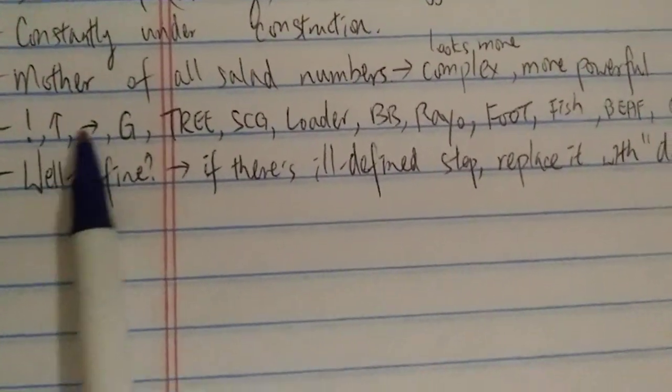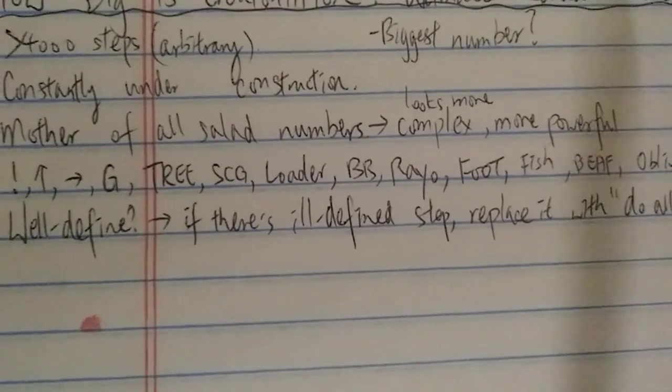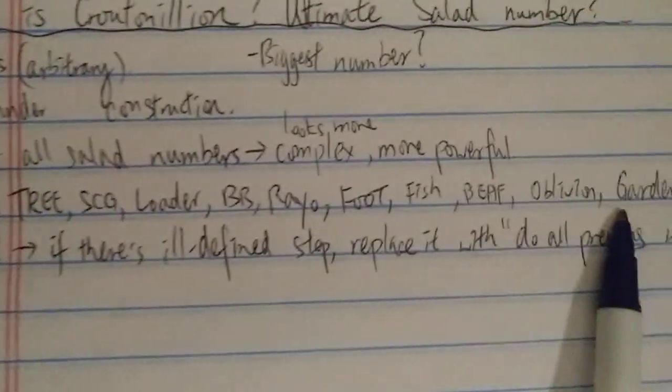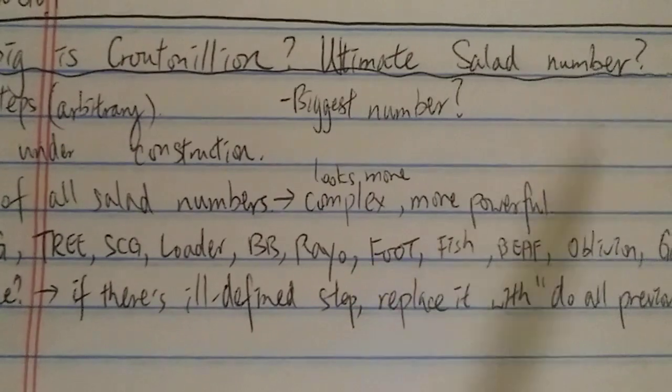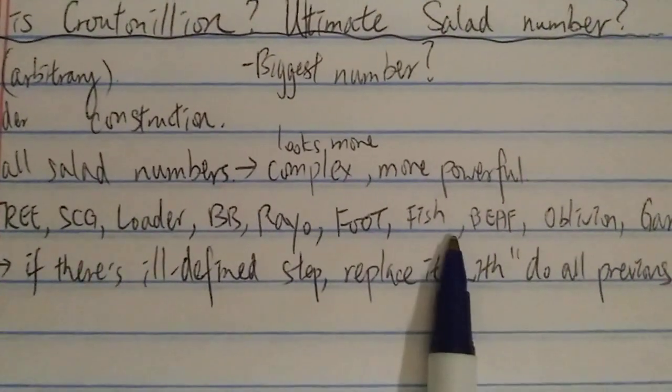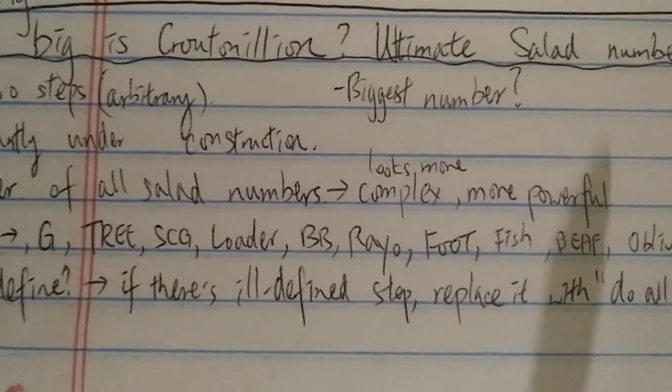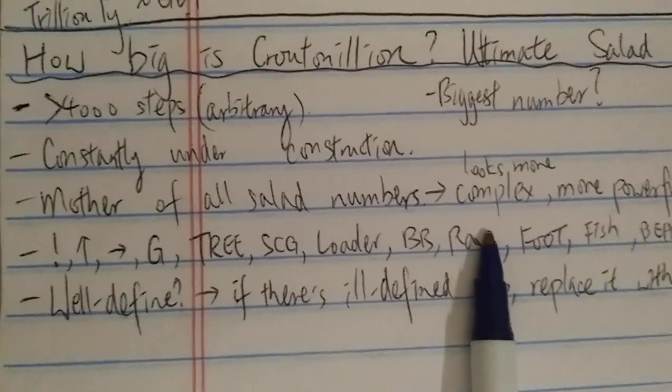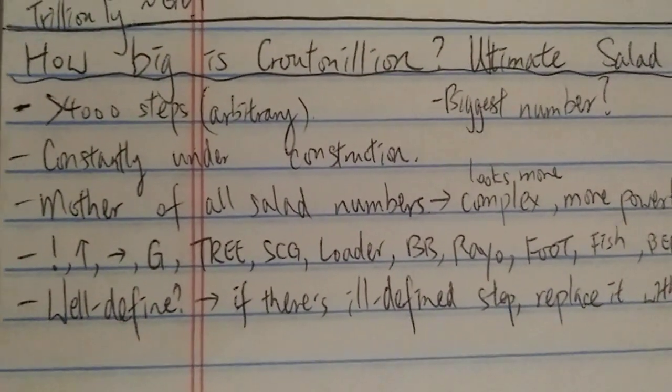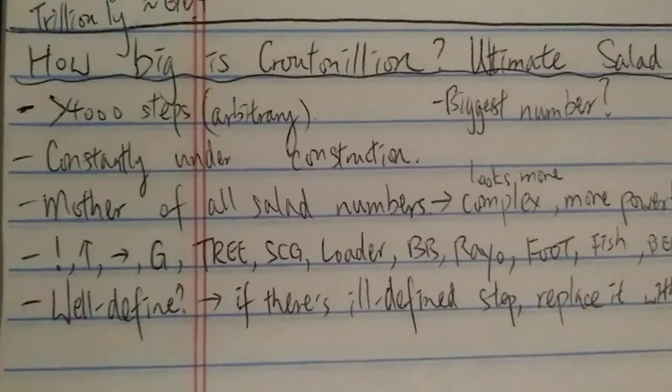Because all other functions, let's say up arrow, factorial, Graham, tree, they wouldn't make a difference as long as one of the steps include Garden's function. Even Rayo doesn't matter, food doesn't matter, beef doesn't matter. So this number is just as big as the strongest number or function that it uses.